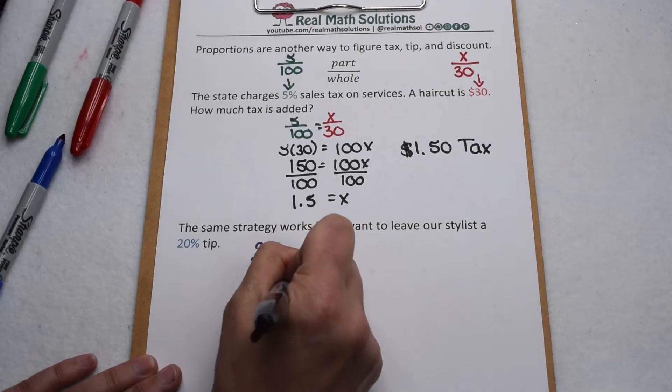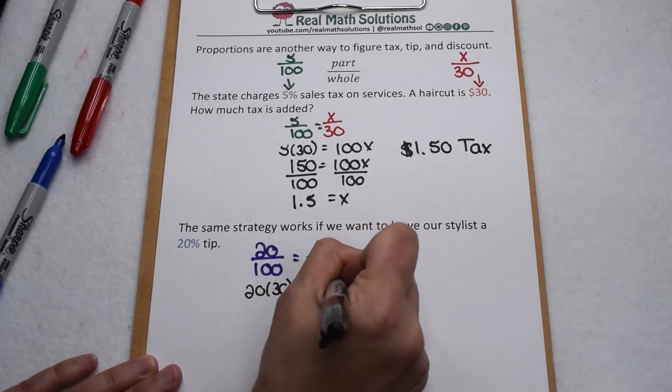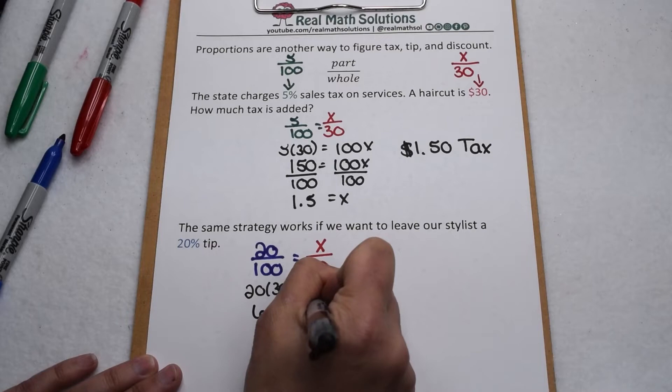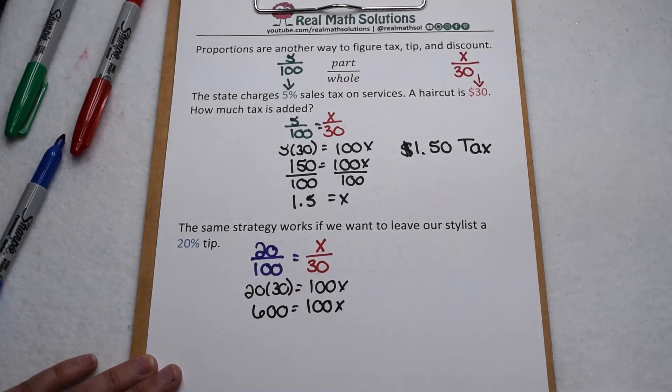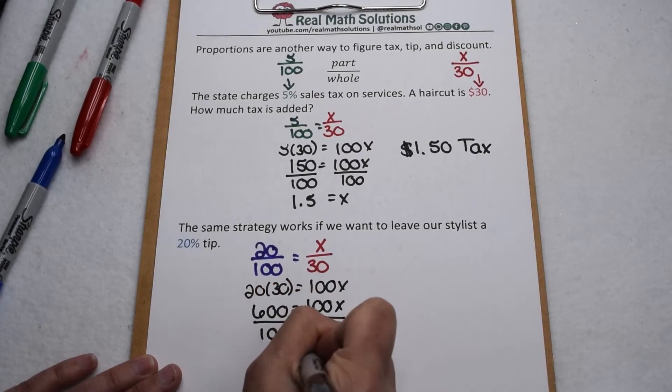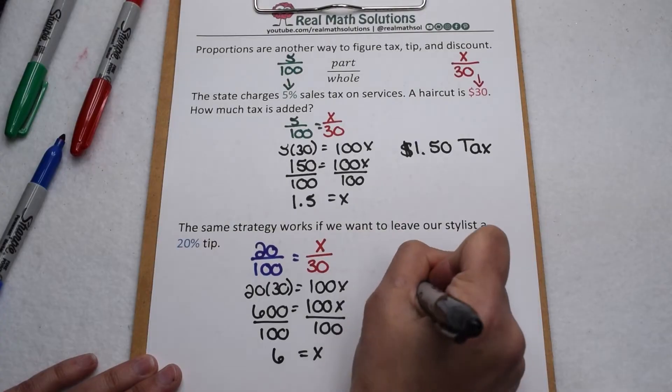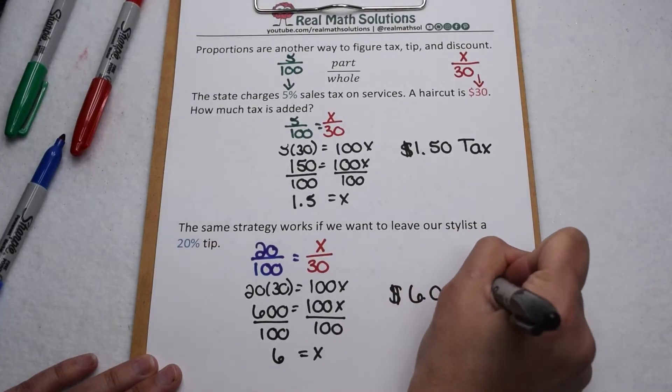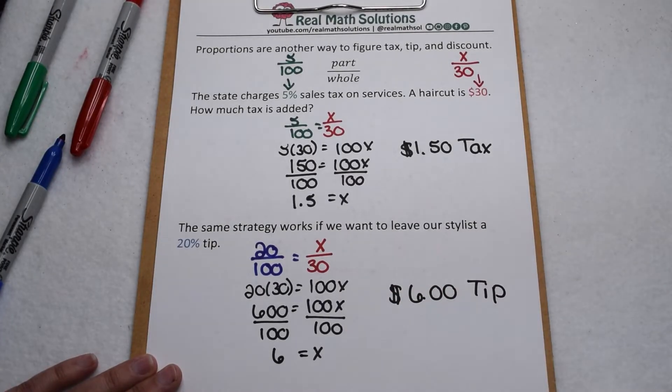We're going to multiply 20 times 30 and 100x. 20 times 30 gives me 600, then I'm going to undo my multiplication with division. We're going to divide both sides by 100. 600 divided by 100 comes out to give us 6, so that means if we leave our stylist a 20% tip, that's going to be worth $6.